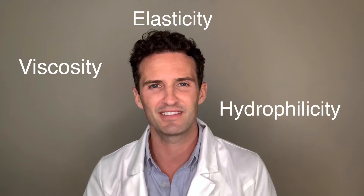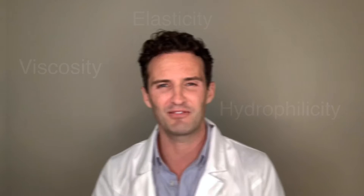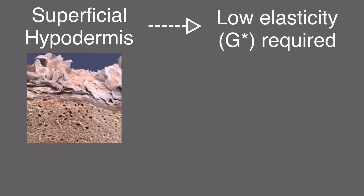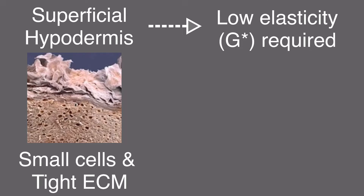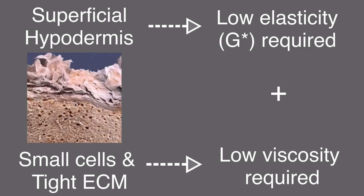So I just want you to be aware of these three essential properties. Get these down under your belt and you're good to go. Let's take a look at this at a microscopic level. On a superficial plane, you don't need much lift, so let's go with a low G prime. The cells in this location are very small and tightly bounded by the extracellular matrix, so ideally we need some product with a very low viscosity and small particle size to prevent the visibility of bumps.